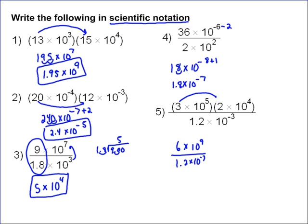6 divided by 1.2 is the same as 60 divided by 12, which is 5. So this equals 5 times—and remember, you subtract the denominator exponent from the numerator: 9 minus negative 3 becomes 9 plus 3, so it's 10 to the 12th. The answer is 5 times 10 to the 12th.